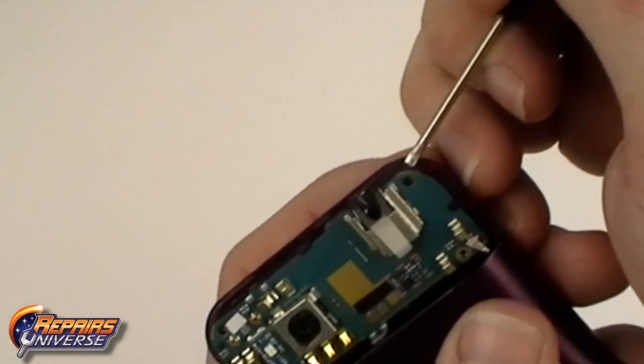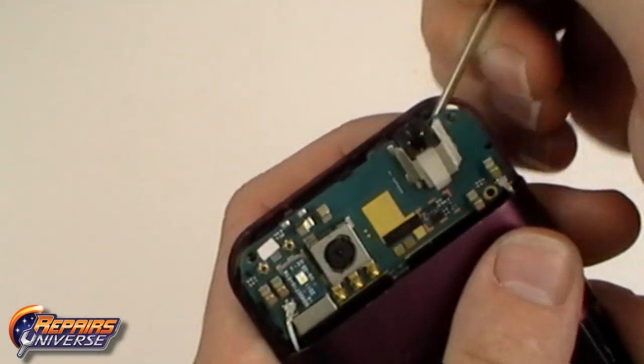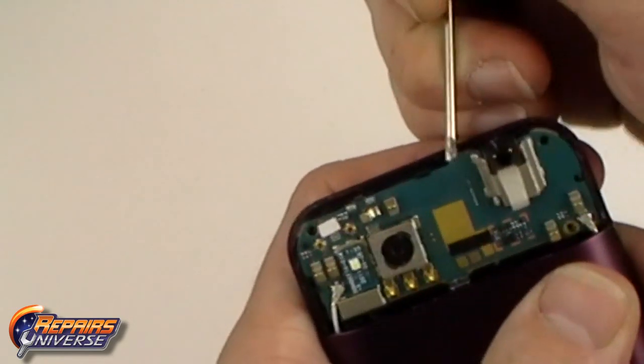Using a pry tool we can now flip the upper motherboard down. This will reveal two jaw connectors which will need to be released.